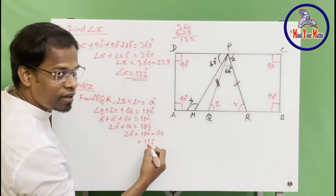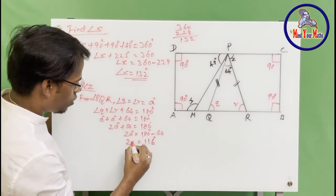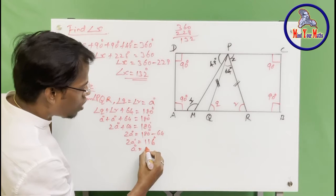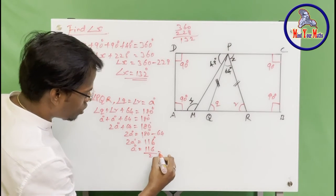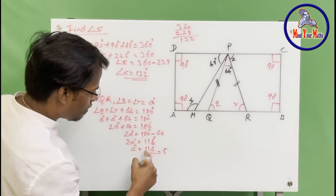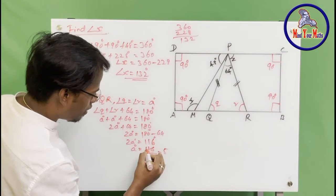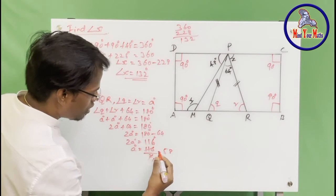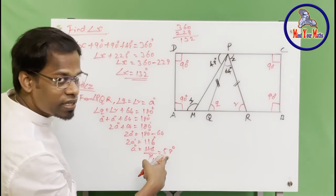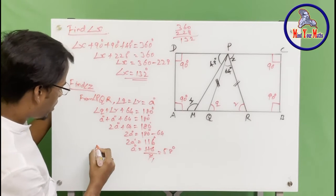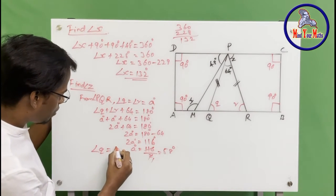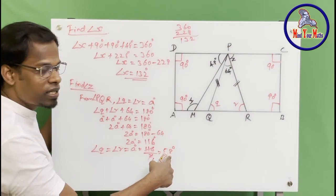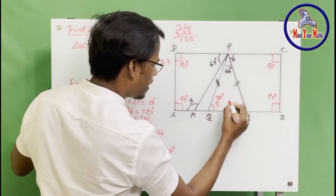2a equals 116 degrees. So a equals 116 divided by 2, which equals 58 degrees. We found that angle q equals angle r equals a equals 58 degrees. So this angle is 58 and the other one is 58 as well.